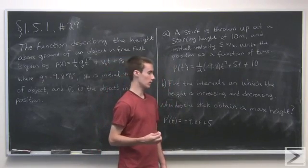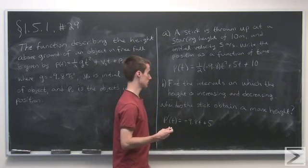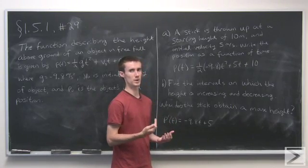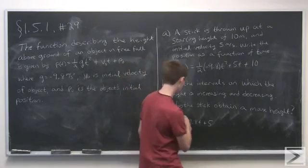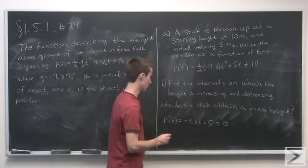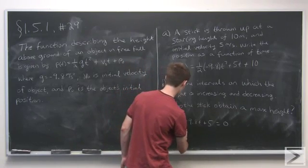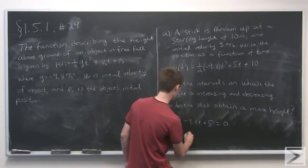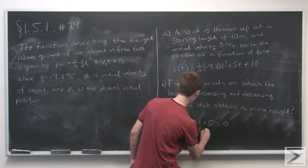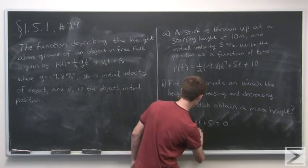We want to find the critical points. Where is this equal to 0, and where does it change? On all the intervals between the critical points, it'll either be positive or negative. So we set this equal to 0 and solve for t, which gives us t is equal to 5 over 9.8.